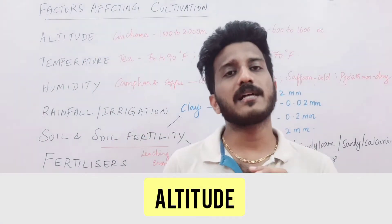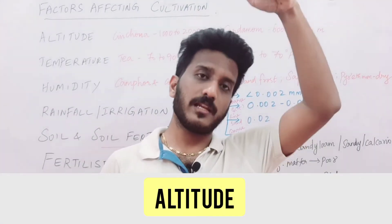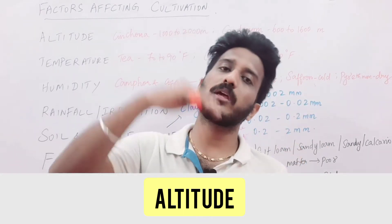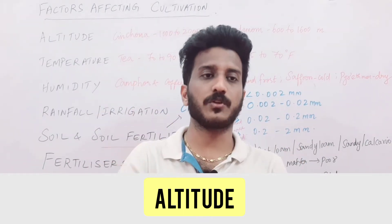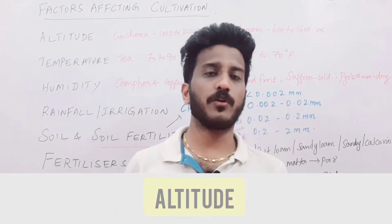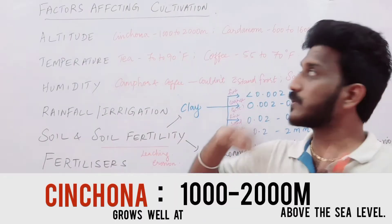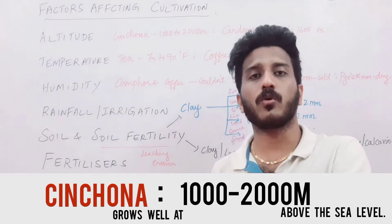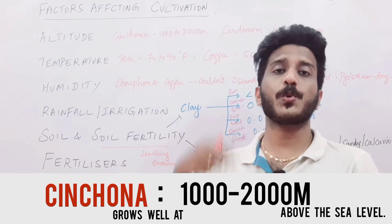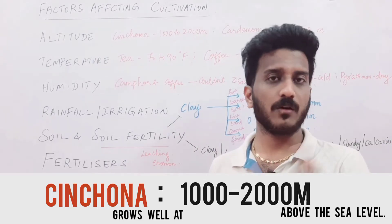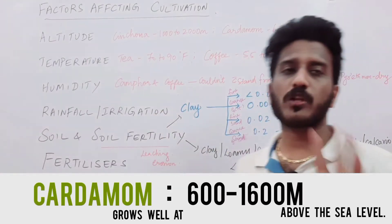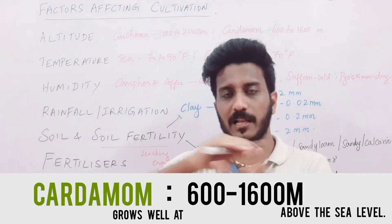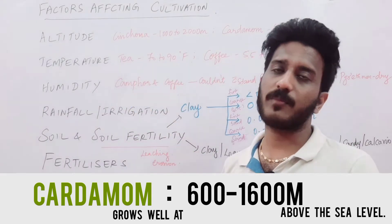The first factor is altitude. Some plants love to grow in taller regions, and some love to grow at a short distance from sea level. For example, cinchona grows at 1000 to 2000 meters. If you try to cultivate it below that, cinchona may grow, but the proper active constituents and the morphological nature of cinchona may diminish. Similarly, cardamom's optimum altitude is 600 to 1600 meters — don't go too low or too high. The level should be maintained. This is how altitude plays a major role.